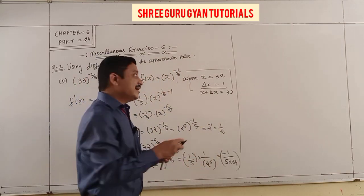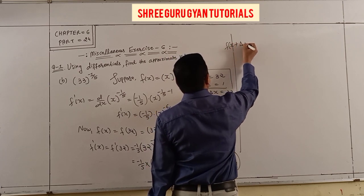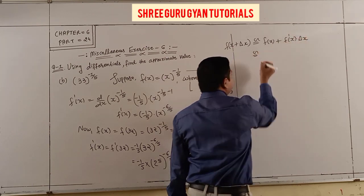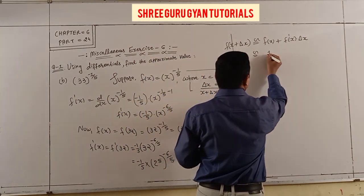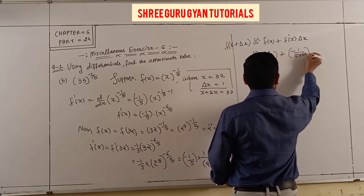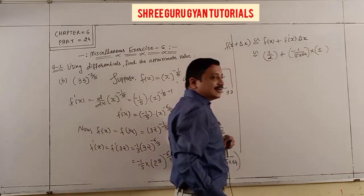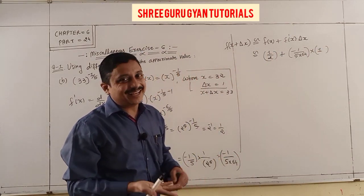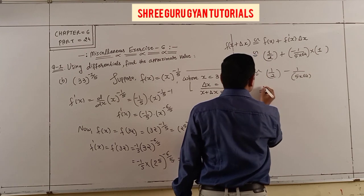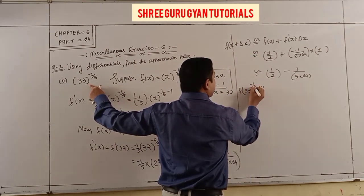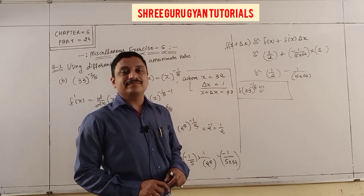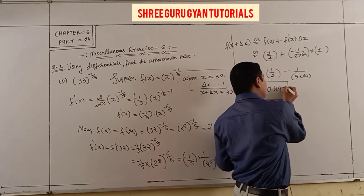Collecting both values in the approximate formula f(x + Δx) ≈ f(x) + f'(x)·Δx: f(x) = 1/2, f'(x) = -1/(5×64), and Δx = 1. Utilize your calculator. The approximate value of 33^(-1/5) is approximately 0.497.